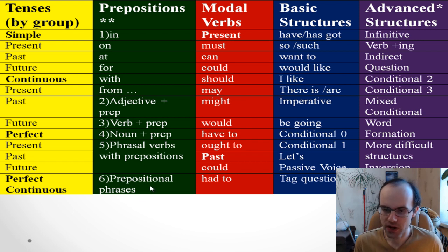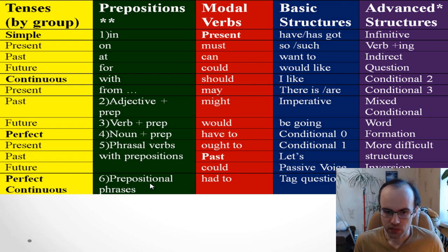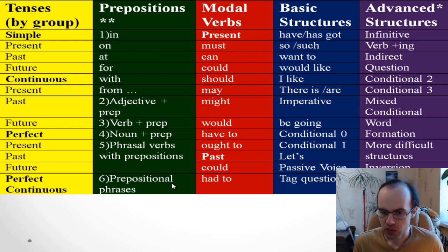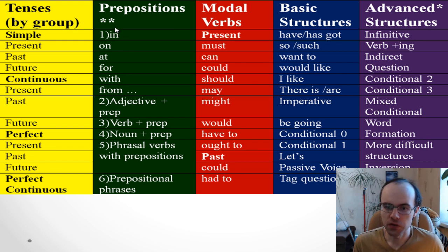Last but not least — prepositional phrases. For example, 'I'm in a hurry' — when you don't have time, you say 'I'm in a hurry.' Also, 'I did it on time' — not 'about time.' We say 'on time': 'I did it on time.'